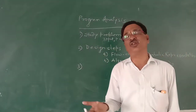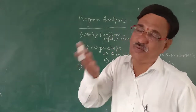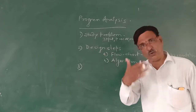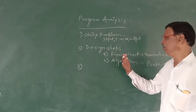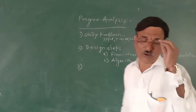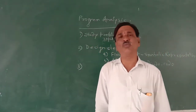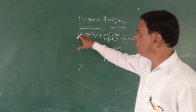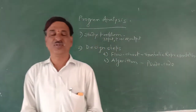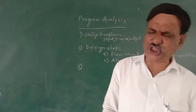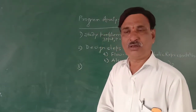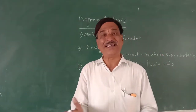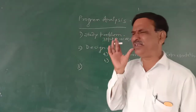A program is a set of instructions given to the computer in order to solve the problem. First of all, study the problem and understand it. Once the problem is studied, write down the steps in our own language in the simplest form. A flowchart is a symbolic representation of the program - symbols are easier to understand than text. Once these two steps are finished, it means we are ready to write a program on the computer.